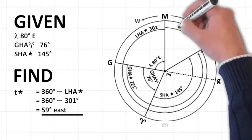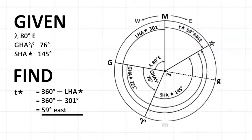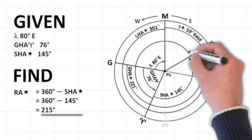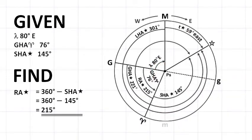Hence, the meridian angle t of the star is 360 degrees minus LHA of the star, which equals 59 degrees. It is labeled east. Right ascension of the star, measured from Aries right to the star, equals 360 degrees minus SHA of the star, which equals 215 degrees.